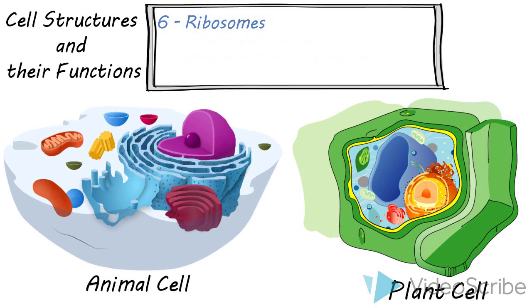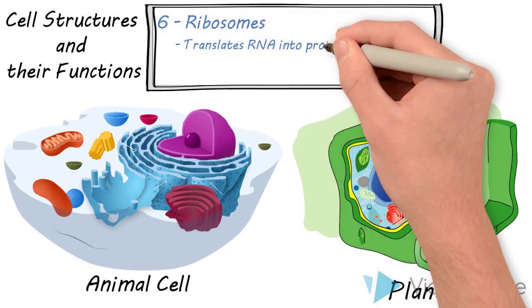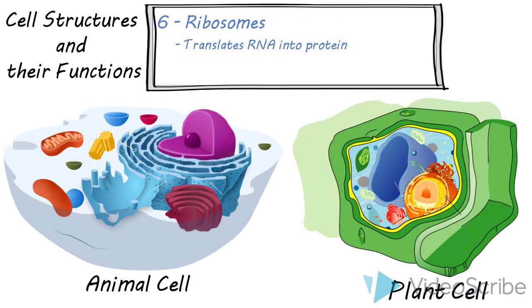Ribosomes, like we talked about, are those little dots on the outside of the rough ER. They translate RNA into proteins. It's a simple job but somebody's got to do it.